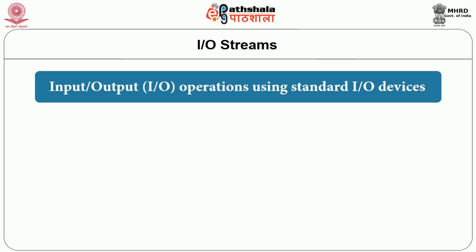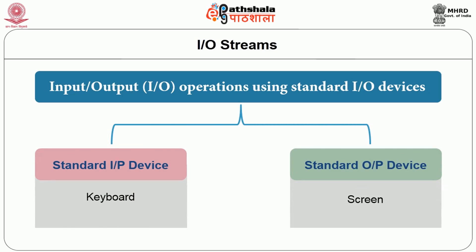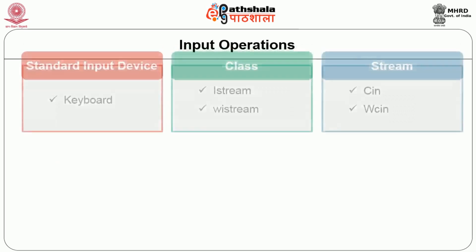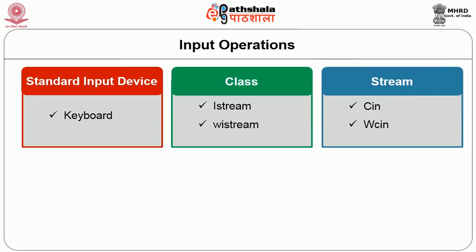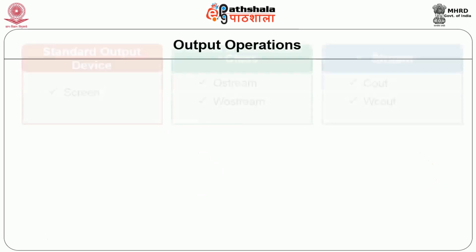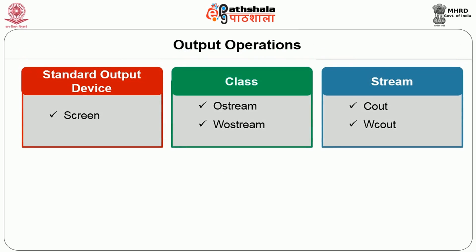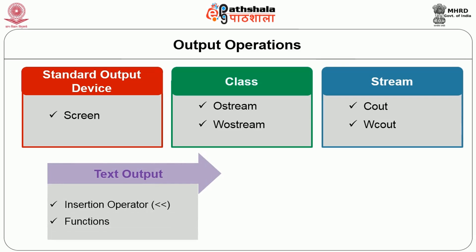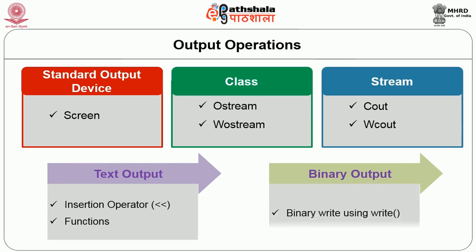Let us see how these operations can be performed using standard input output devices. The standard input device is keyboard and output device is screen. For input operations we will use istream or wistream class and the streams are cin or wcin respectively. Text input can be performed using either the extraction operator or using functions. For binary input, we will use the read function. For output, we will use cout, and for text output the insertion operator <<, or functions. For binary output we will use the write function.